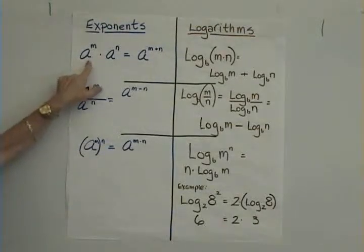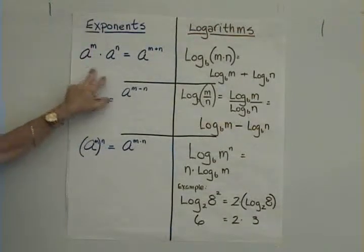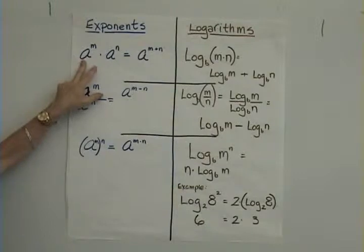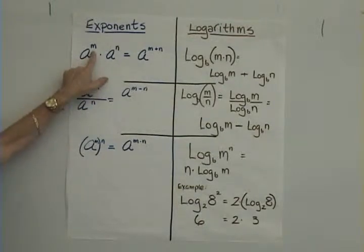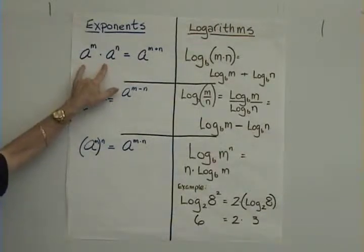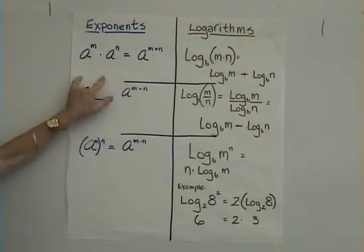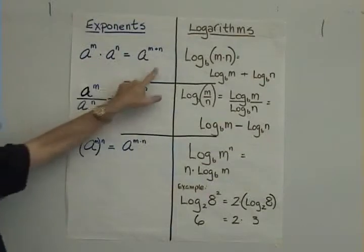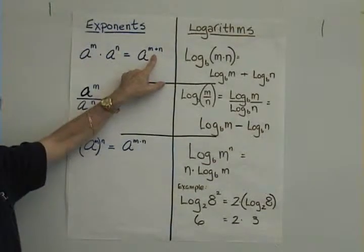Here's the example for exponents and properties of exponents. A is our base number and m is our exponent and here n is our exponent. When you have two numbers in the same base with different exponents and they're being multiplied, you can simply add the exponents.